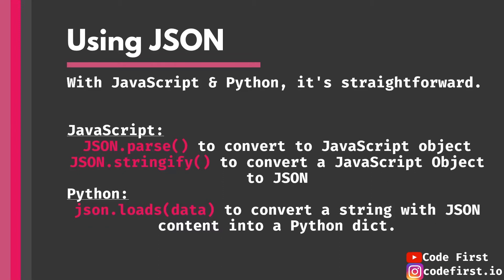In Python, there is a data structure called a dict — a dictionary — and it's pretty much identical to JSON syntax. You use json.loads() to load your data into a dictionary variable, and that's how you convert a string with JSON content into a Python dict. From then on you manipulate it like any Python dictionary, forgetting it was ever JSON. Both JavaScript and Python make it very straightforward and built-in to work with JSON.